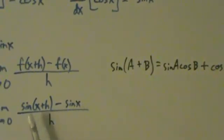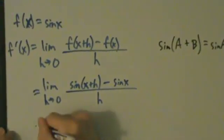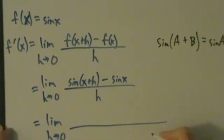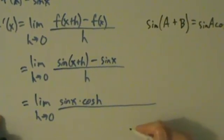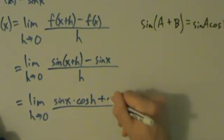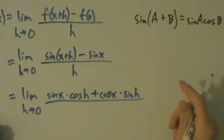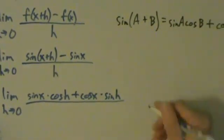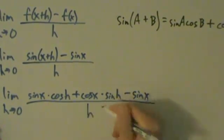Let's apply that here. Instead of a and b, we have x and h, but the same thing applies. So this equals the limit as h goes to 0 of sine x times cosine h, plus cosine x times sine of h. That's this term being expanded with the trig identity. We still have a minus sine of x, all divided by h.